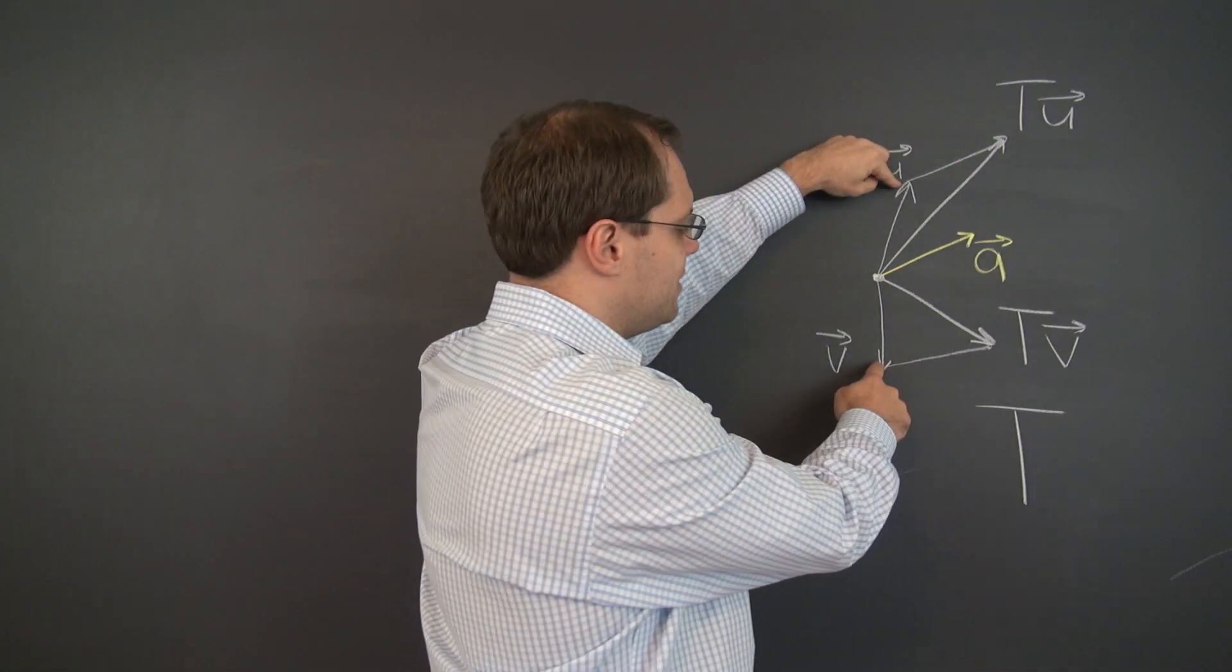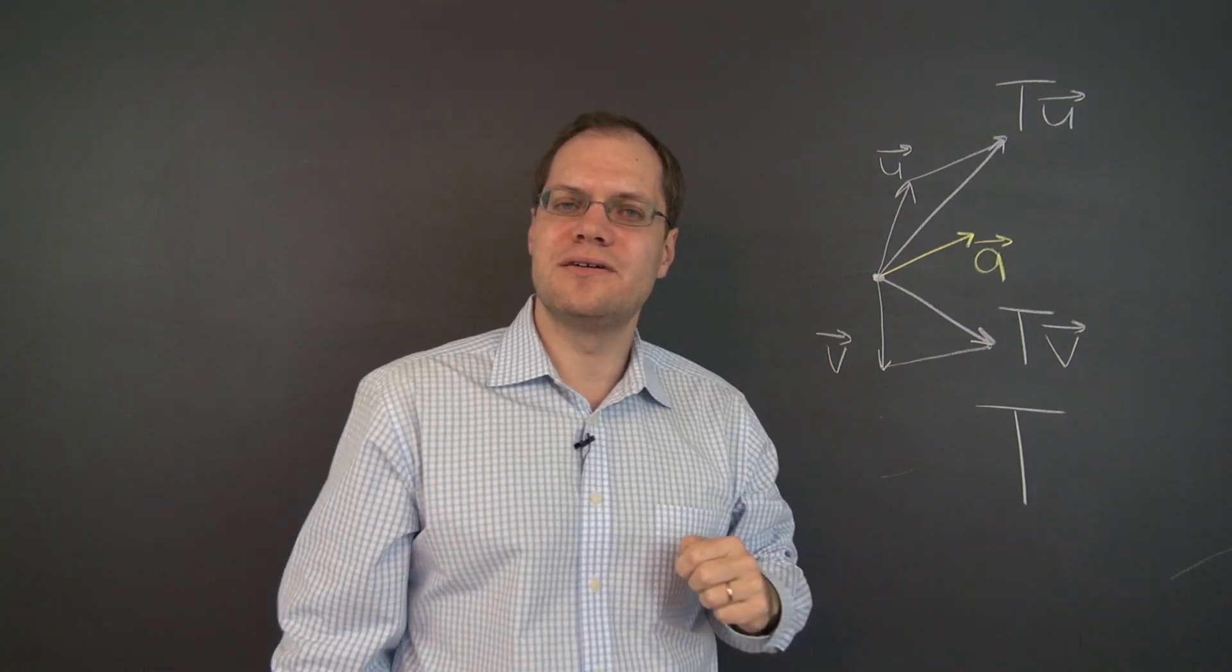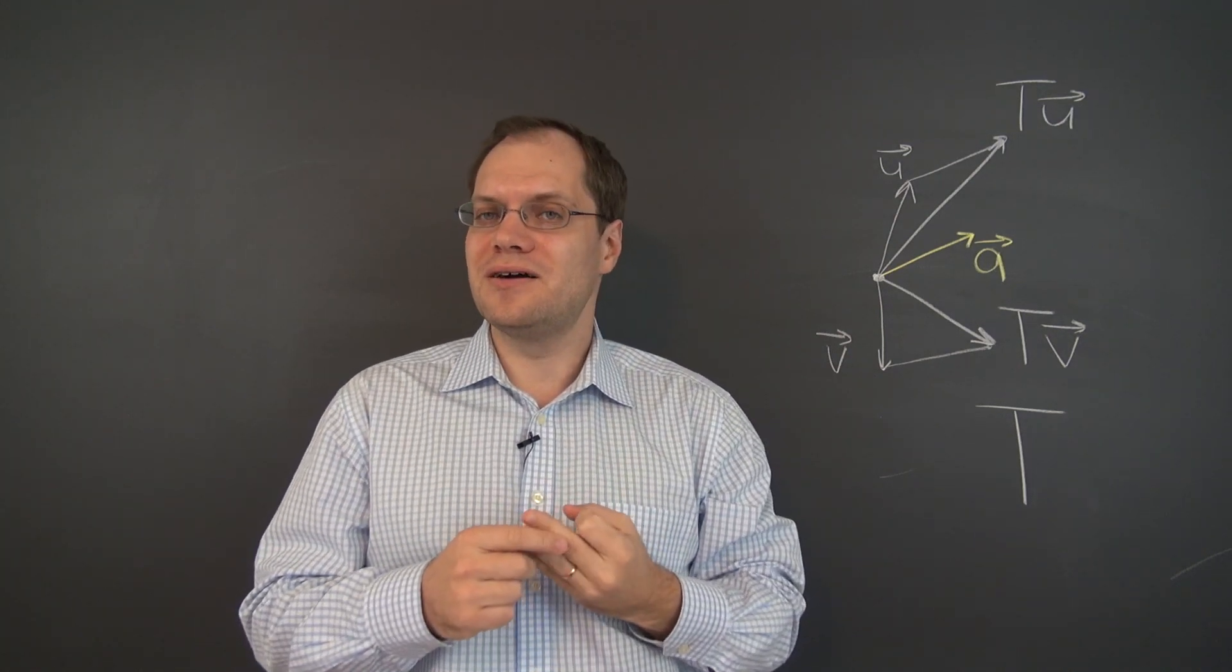And what will happen if you add the two vectors first and transform the result? The result will be u plus v plus a.